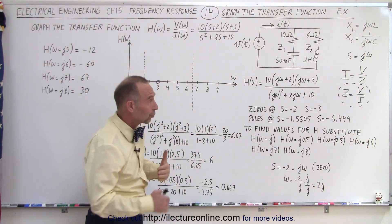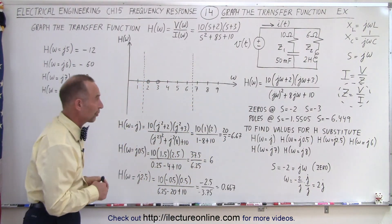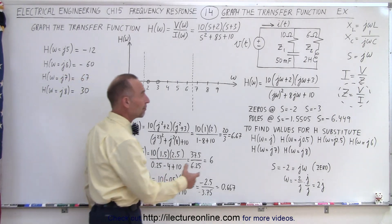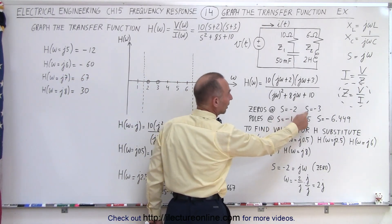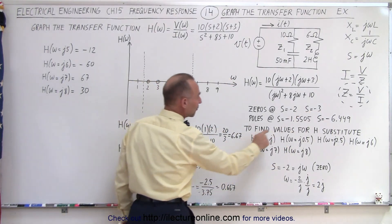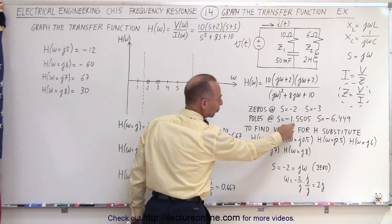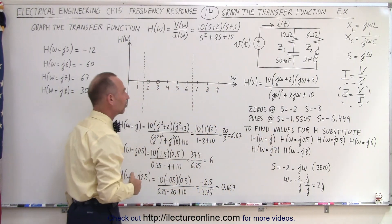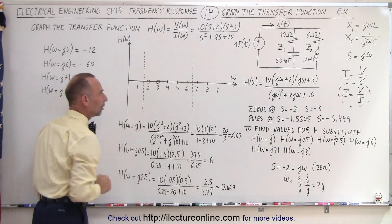Now what we're trying to do here is graph that transfer function. We realize that we found two zeros, one at s equals negative 2 and one at s equals negative 3. We indicated those on the graph, and then we found the two poles, one at about minus 1.5 and one about minus 6.5, so we put the poles there as well.